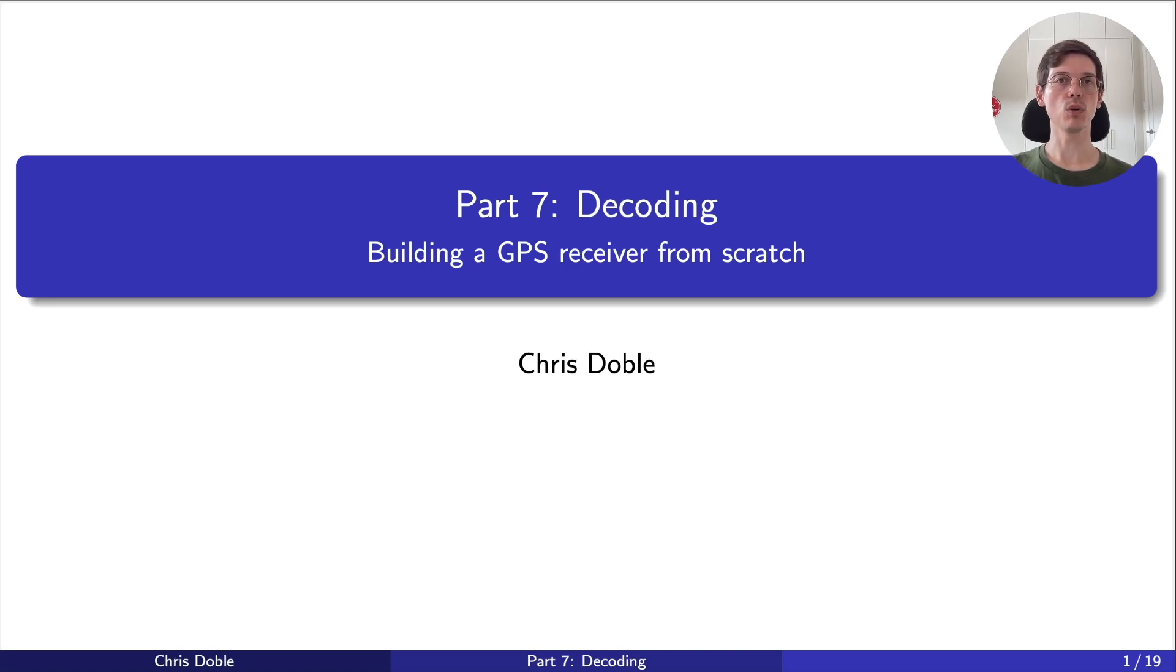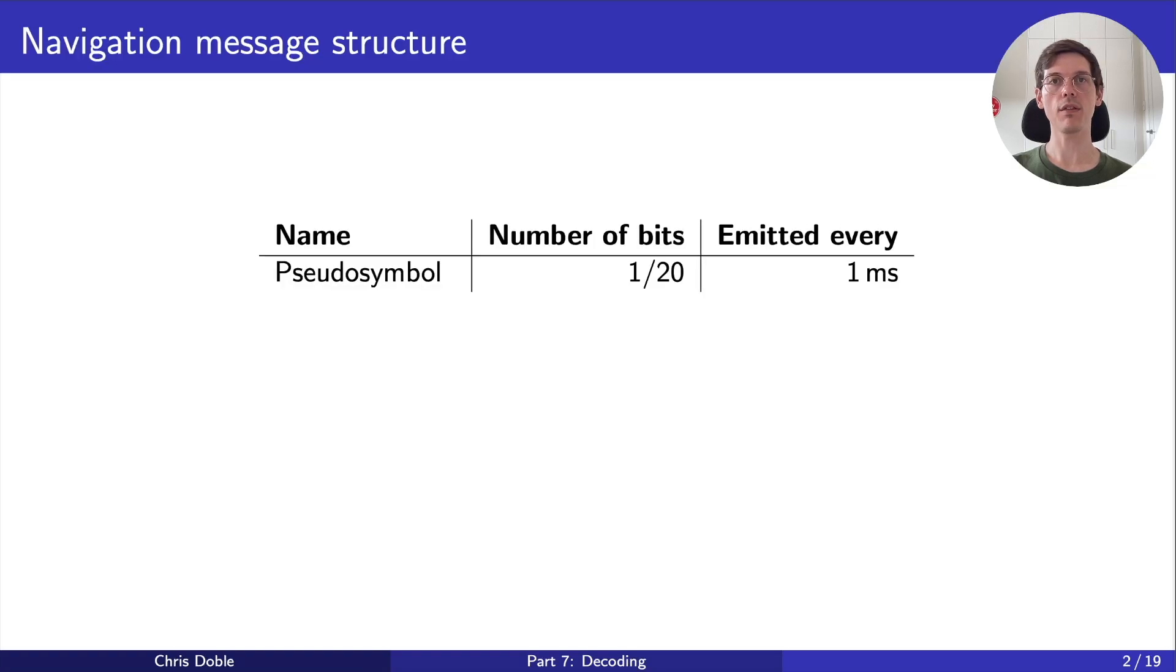Let's start by exploring the structure of the navigation message to better understand what it is we're decoding. At the lowest level, the tracking stage emits a 20th of a navigation message bit each millisecond. These are called pseudo-symbols to emphasize the fact that we don't yet know how they map to binary zeros or ones.